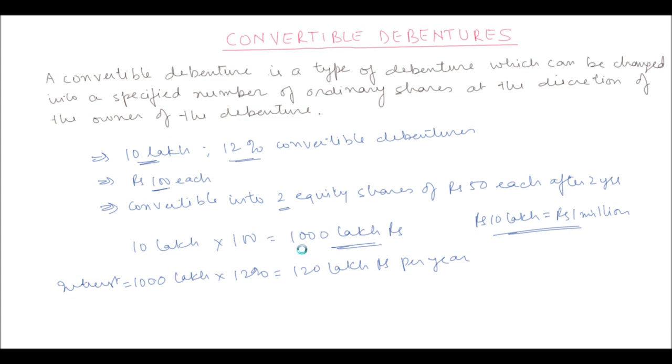Now after 2 years, the owner can exchange 1 debenture for 2 equity shares of Rs. 50 each. So the price is locked at the beginning. Now if the market value is more than Rs. 50 at the end of 2 years, the owner of the debenture is already in profit. He already has made capital gains. And then the owner can continue to remain invested in those shares, and as the price increases, his capital gain continues to increase. Also the shareholder will now be entitled to get dividends in these shares which he owns.